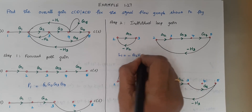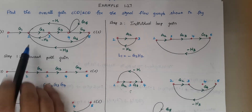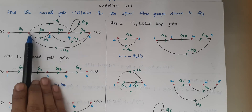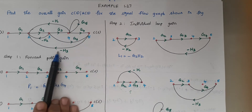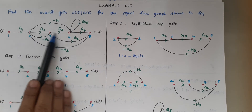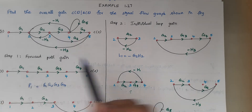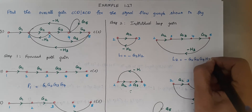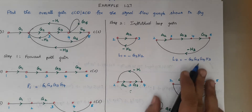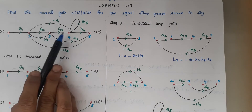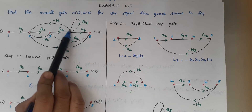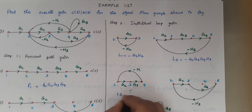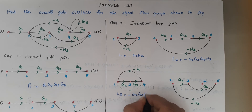The next loop follows path 2, 3, 4, 5, back to 2. It starts at node 2, travels through nodes 3, 4, and 5, and returns to node 2. This is loop 2 with gain −G2G3G4H3. The next loop covers nodes 2, 3, and 4: going 2 to 3, 3 to 4, and back to 2. Loop 3 gain is −G2G3H1.